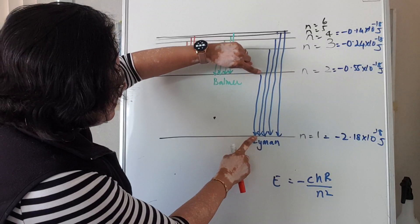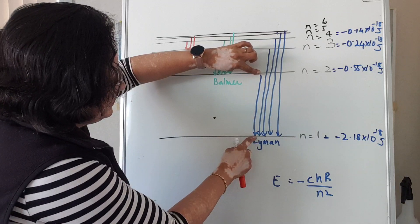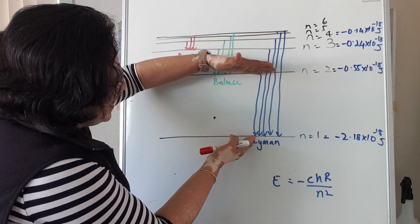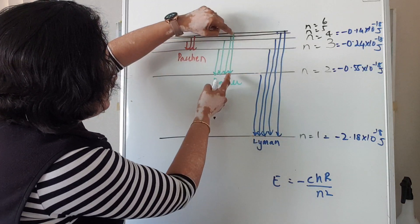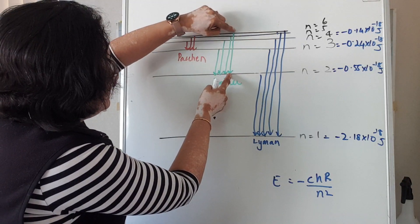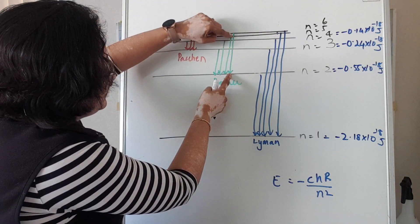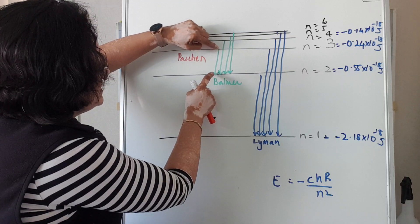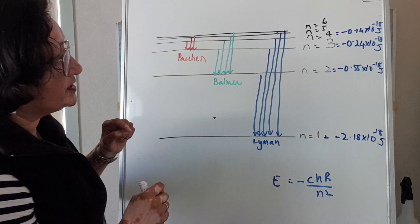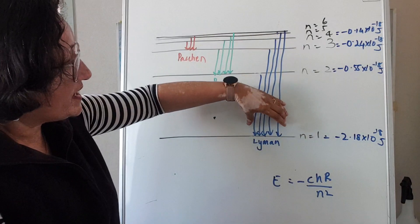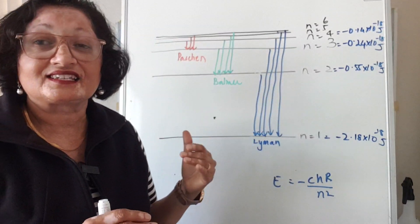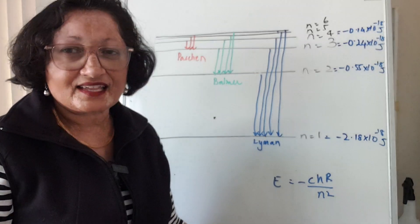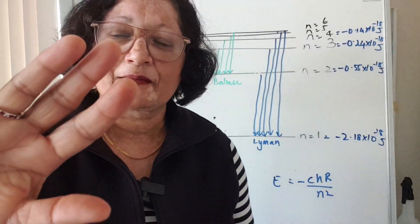The important thing is that the shortest jump from one level to level 1, so from 2 to 1, is much bigger than the biggest jump from infinity to level 2. And again, the shortest level from 3 to 2 is much bigger than from infinity to 3. And that is why every series is quite distinct. I hope that made sense. Bye for now.